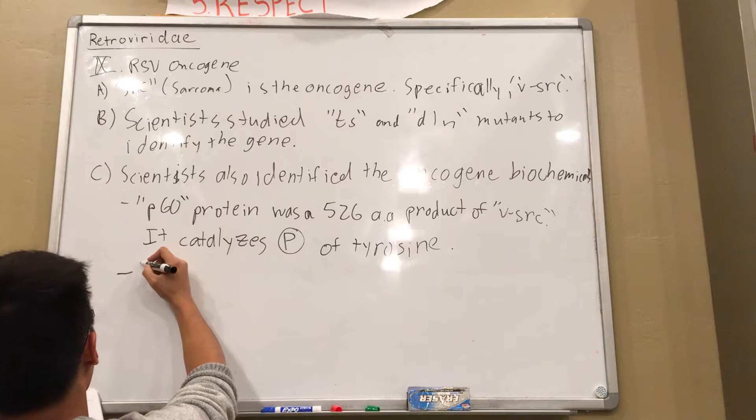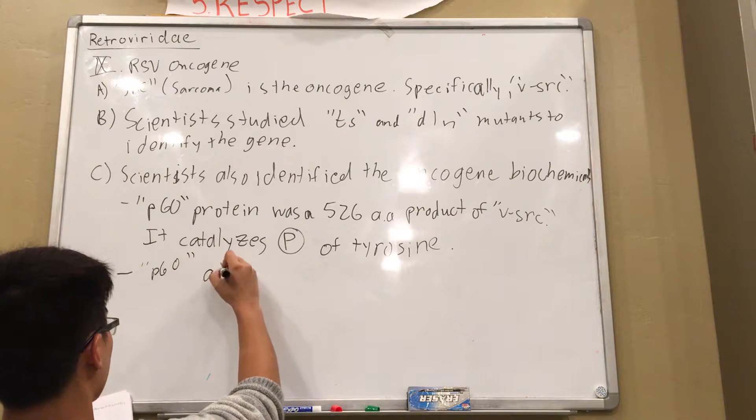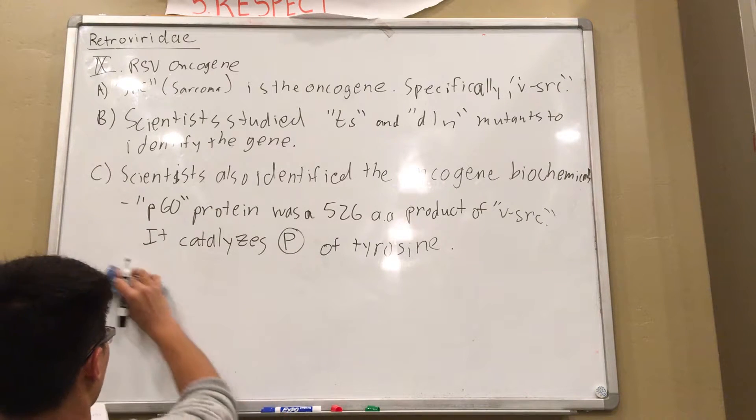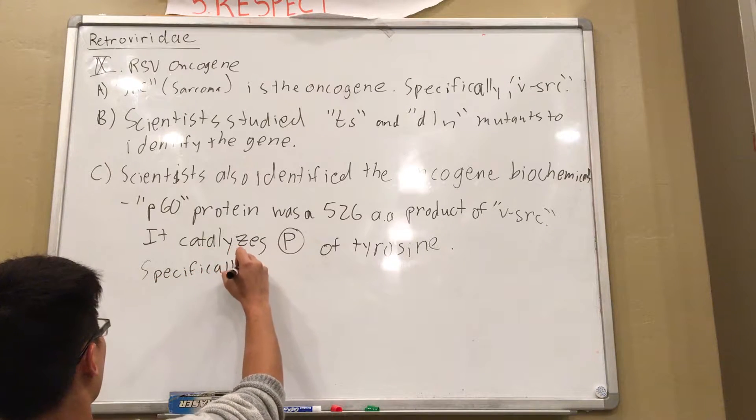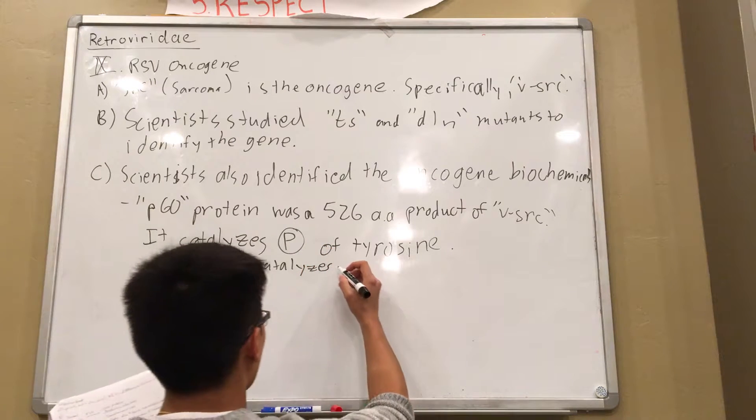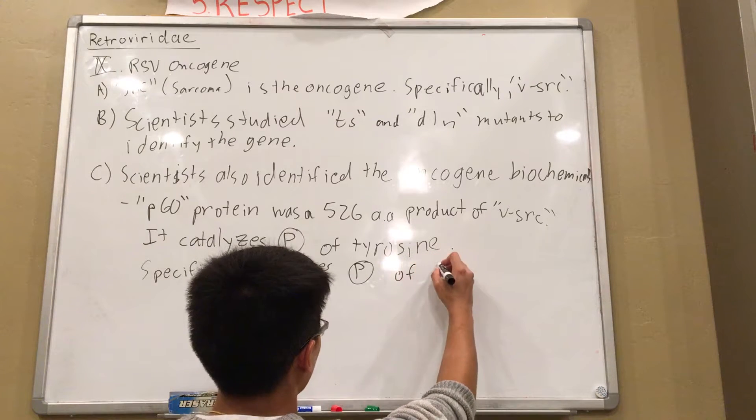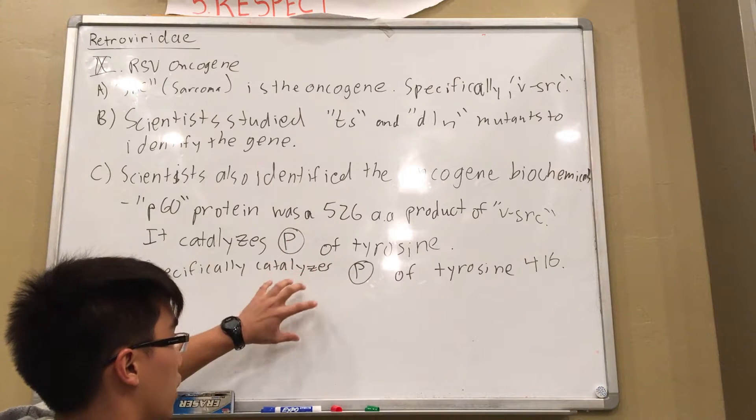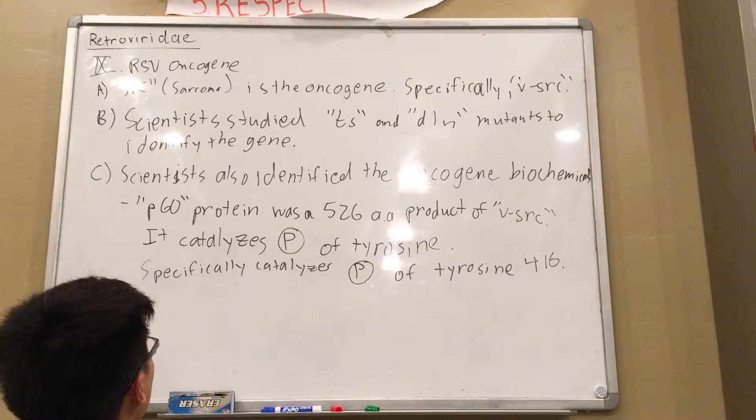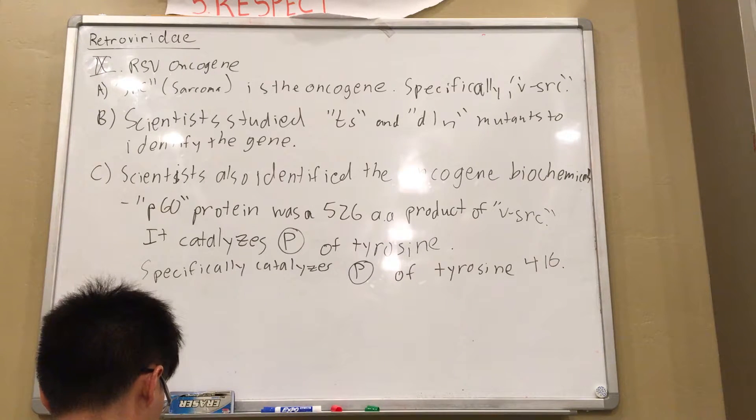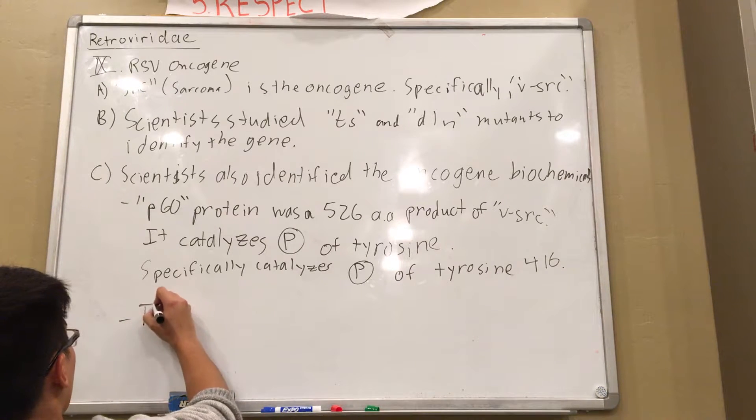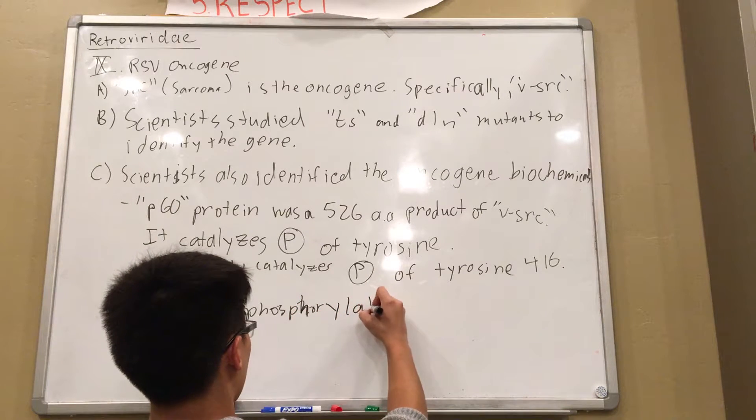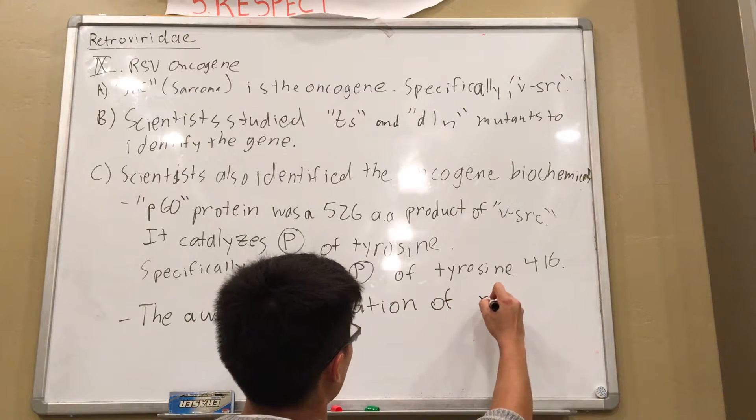And this P60 specifically catalyzes phosphorylation of tyrosine 416. So this protein is 526 amino acids, it's big. The 416th amino acid is tyrosine and basically this protein phosphorylates itself and by doing that, the autophosphorylation of P60 messes up the cell growth cycle.